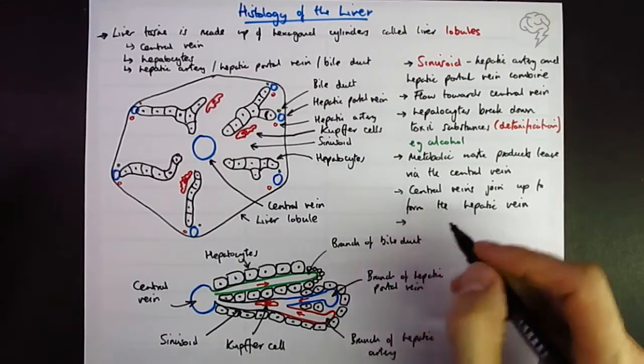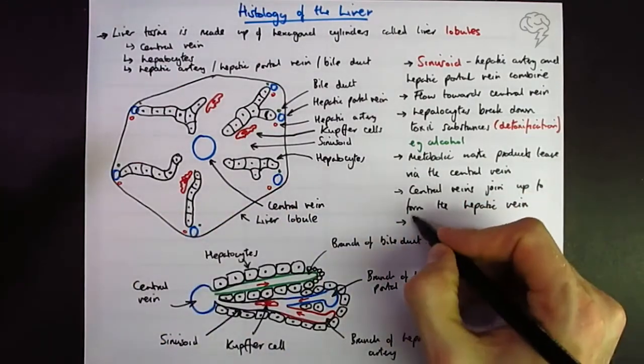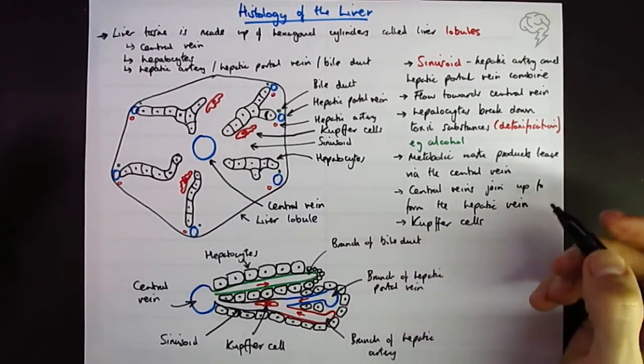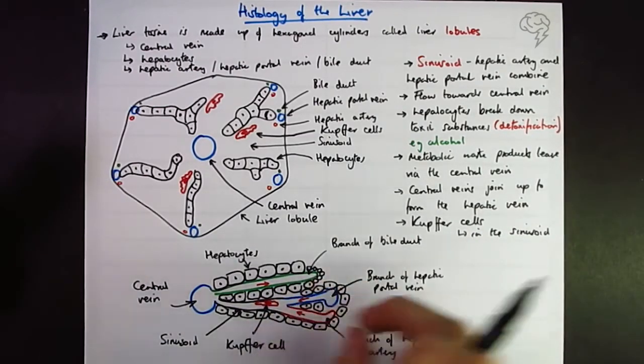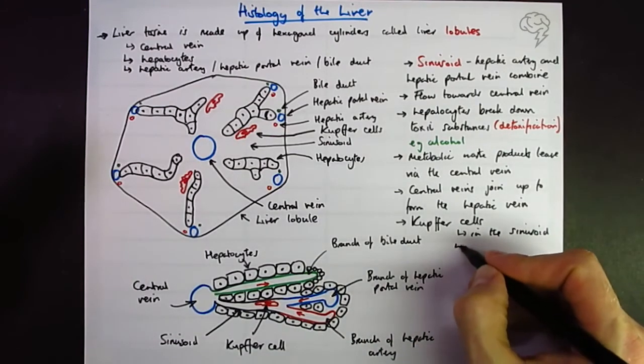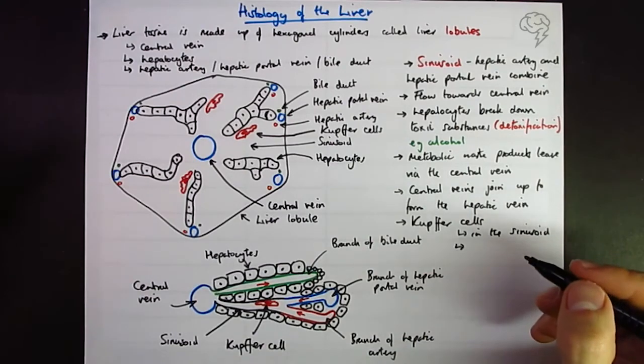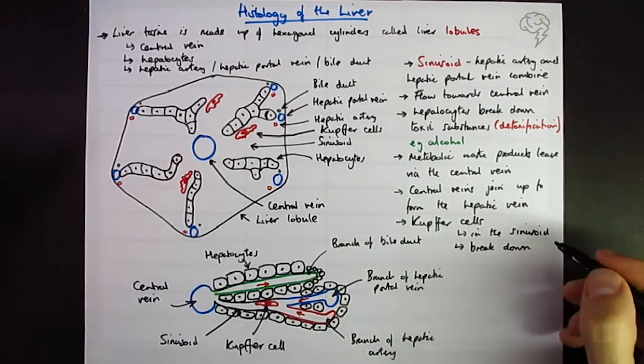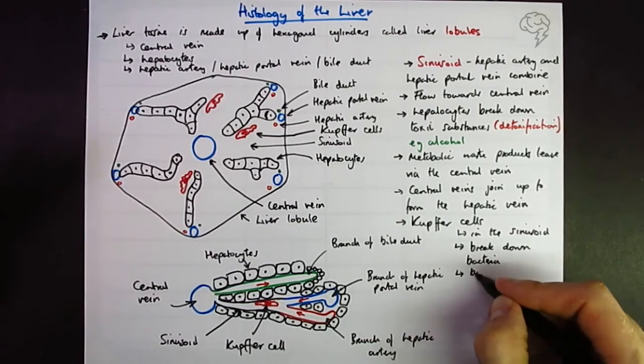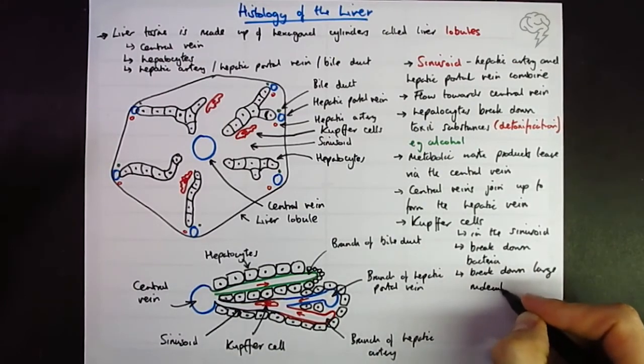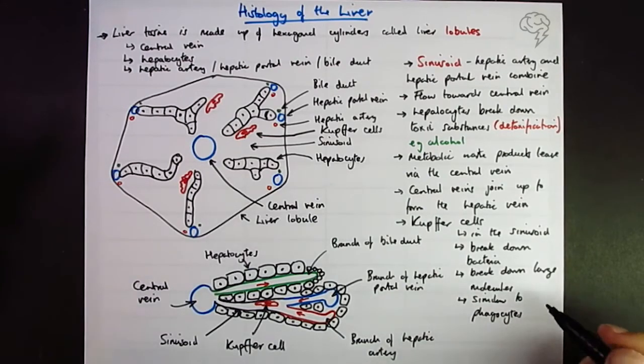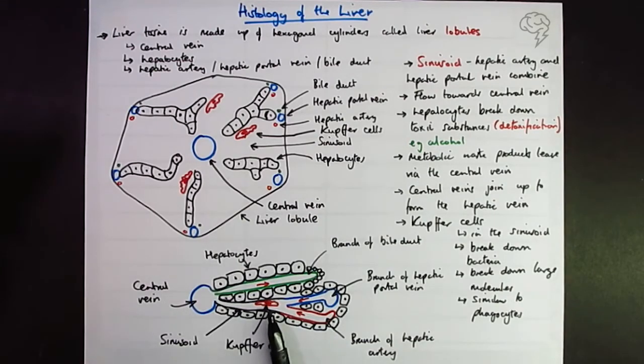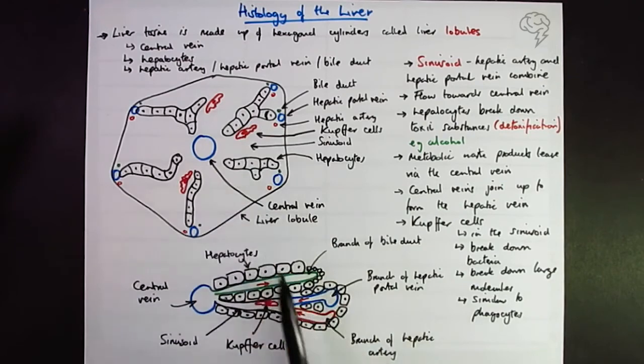Finally, a note on Kupffer cells. They're in the sinusoid - in this channel here where the two, the hepatic portal vein and the hepatic artery, have joined. They basically break down bacteria - they're a type of macrophage, a bit like phagocytes. They can also break down large molecules, similar to phagocytes. If you need to identify them, they're irregular shaped cells, not looking quite like the others, with a larger nucleus. The hepatocytes are the cells you can see with the nucleus.